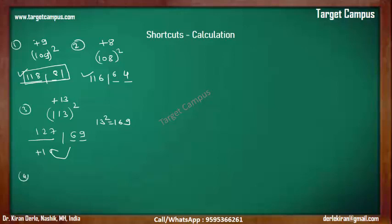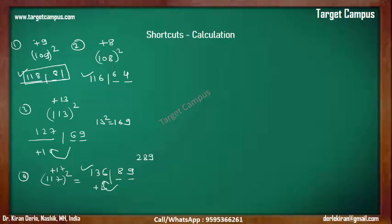Question number 4: square of 117. This is plus 17 from 100. The square of plus 17 is 289. We write only 89 in this part; 2 will be carried. So 117 plus 17 is 134, plus 2 is 136. The answer is 13689 — barely 1.5 seconds. Practice it.